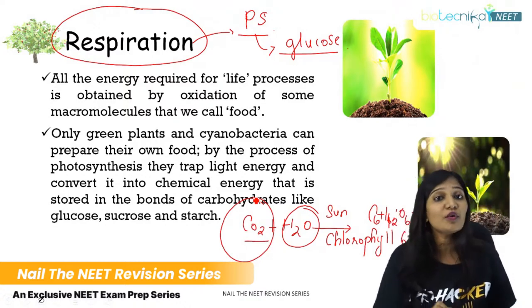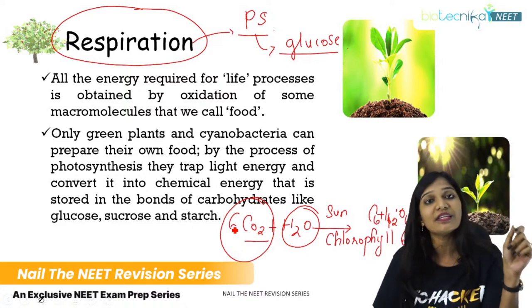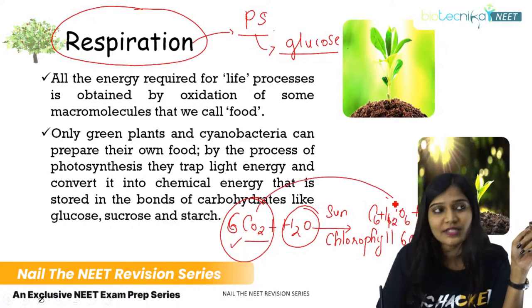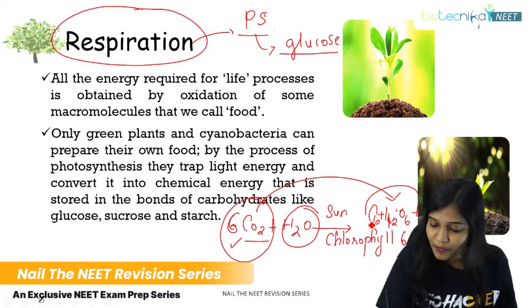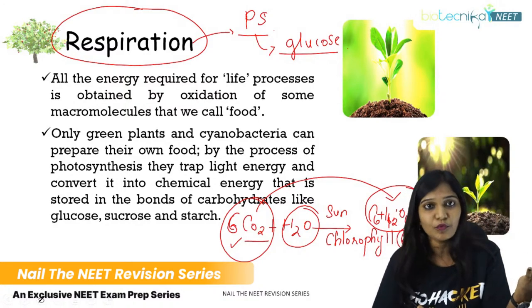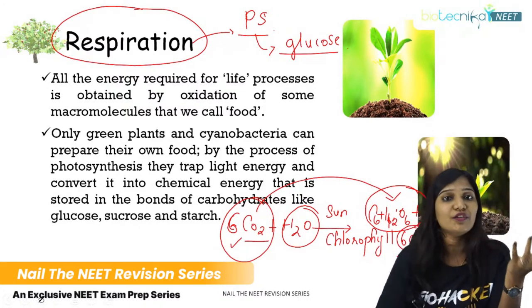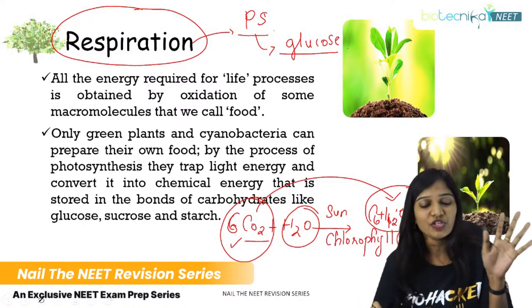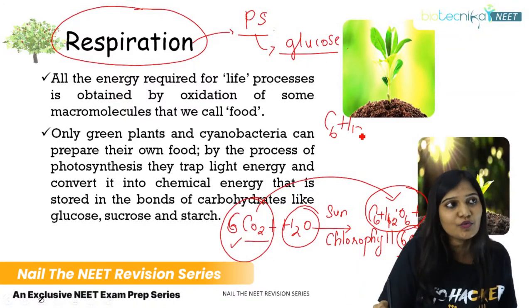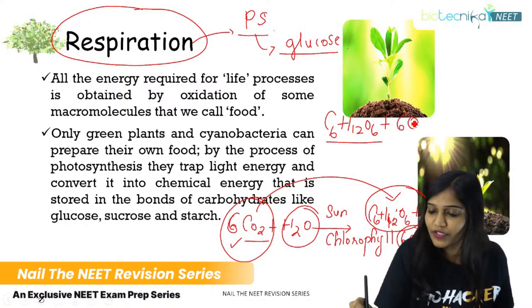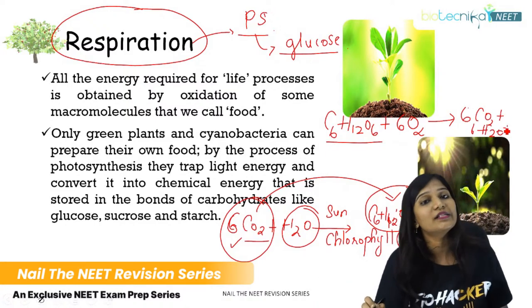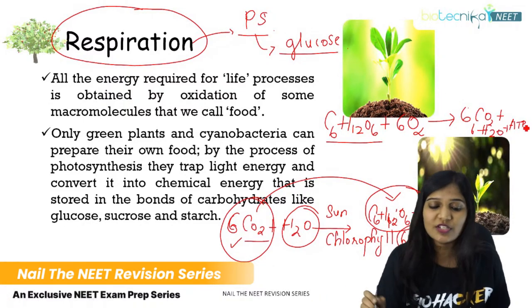In photosynthesis, six carbon dioxide molecules are fixed in six Calvin cycles to make one glucose molecule. In respiration, the plant utilizes the glucose it produced along with oxygen to produce energy for all metabolic processes. Writing the reverse equation: C₆H₁₂O₆ + 6O₂ → 6CO₂ + 6H₂O + ATP energy. This is just the opposite of the photosynthesis reaction.